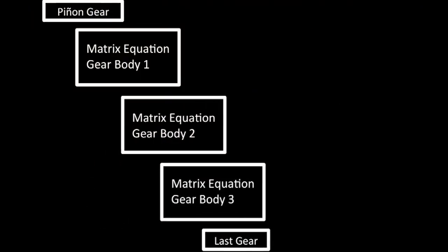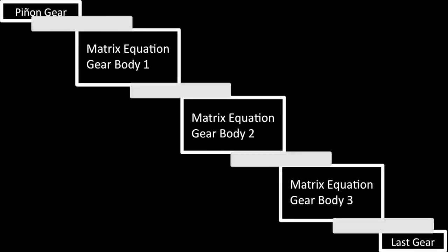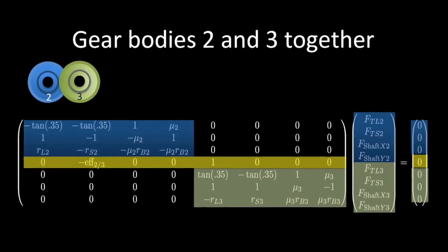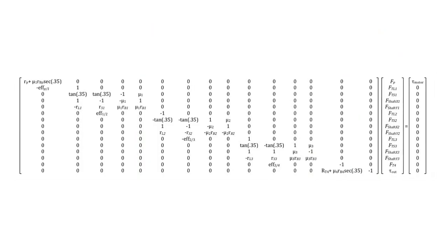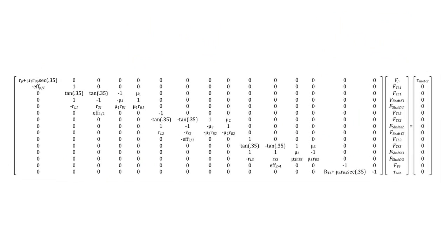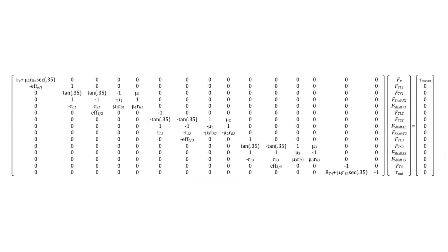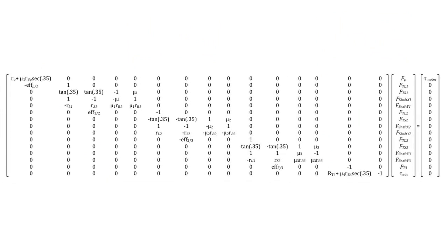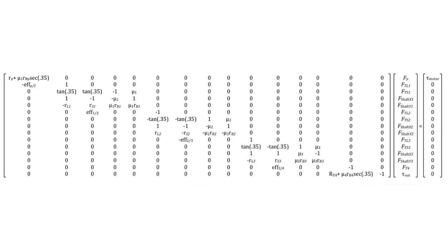To summarize, we built an engineering model of a servo motor gear train using systems of linear equations. Building this model was a challenge and took some time. But now that we have this 15 by 15 matrix, a computer can solve it easily. Now you're free to imagine all sorts of what-if scenarios to explore the relationships among the variables and improve the design. We hope this video inspires you to use linear algebra to improve your engineering designs. Thanks again for joining.